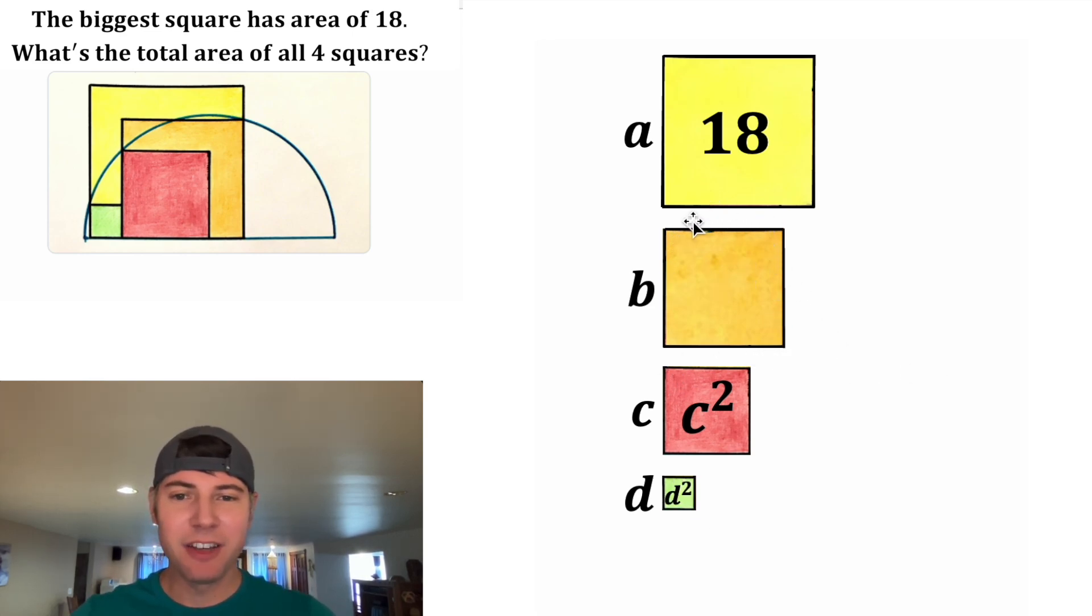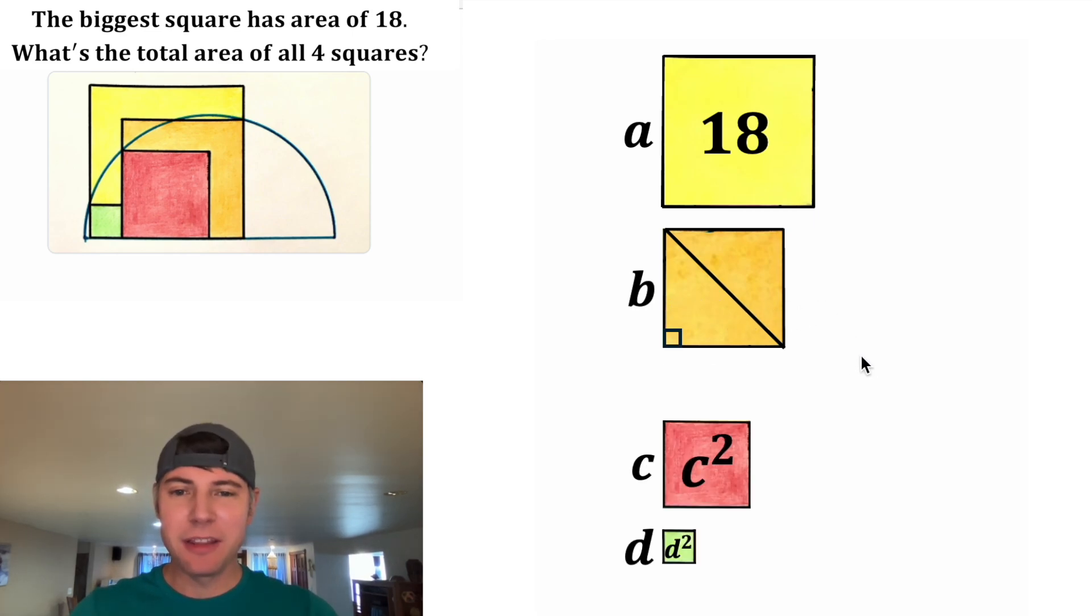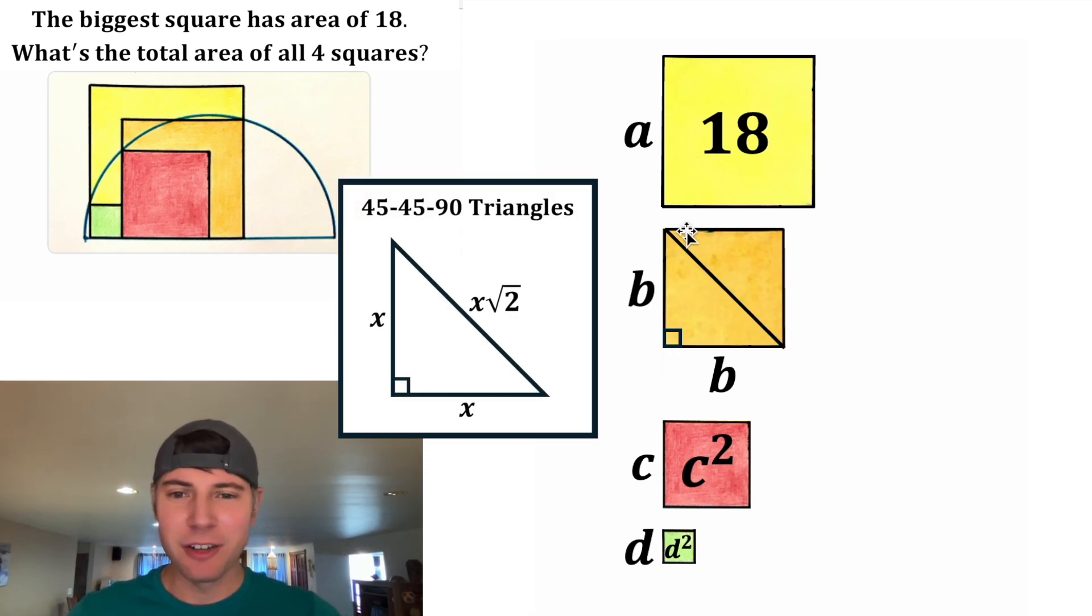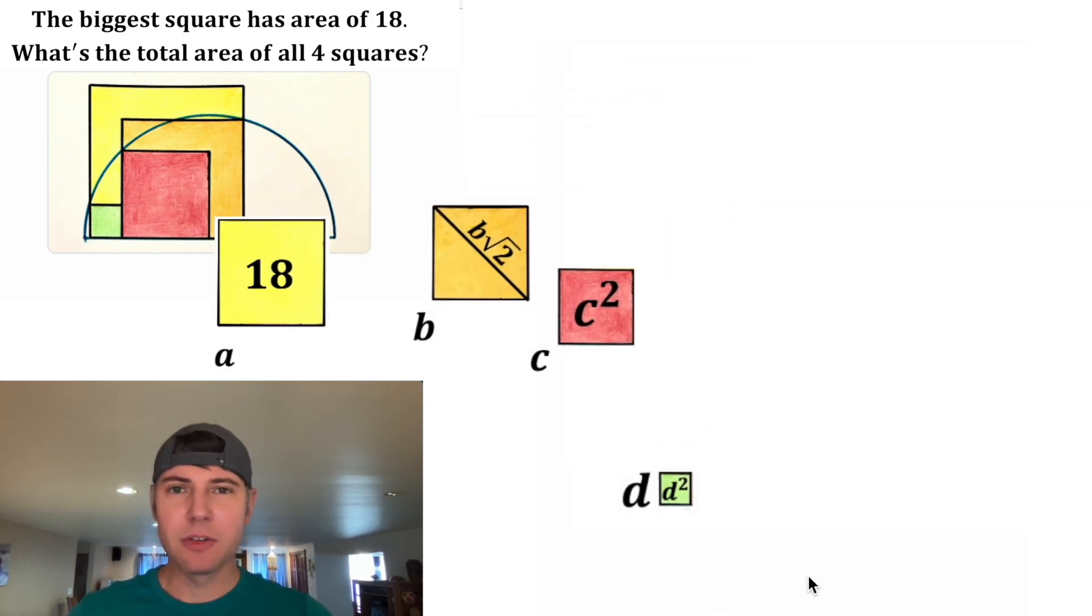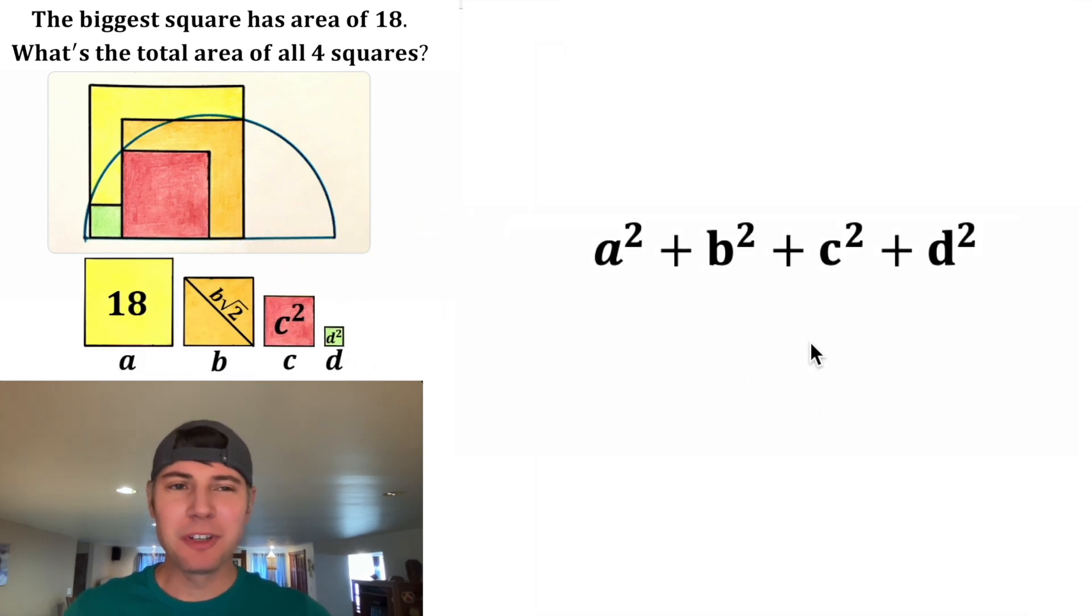We can also assign values to the diagonals of these. Since it's a square, we know this is a right angle and the base has a length of B. So this is a 45-45-90 triangle. We can look at the notes of a 45-45-90 right triangle and see the hypotenuse has a length of B root 2. So our goal is to find out what is the area if we add up all of these squares. So we're looking for A squared plus B squared plus C squared plus D squared.